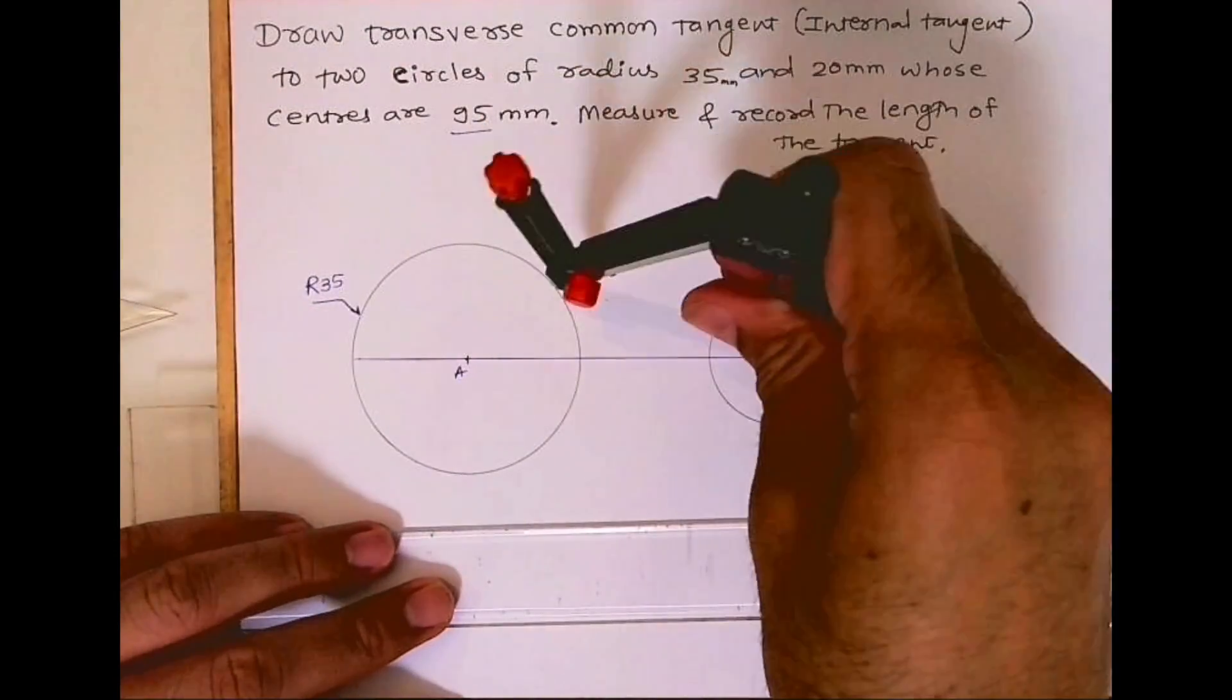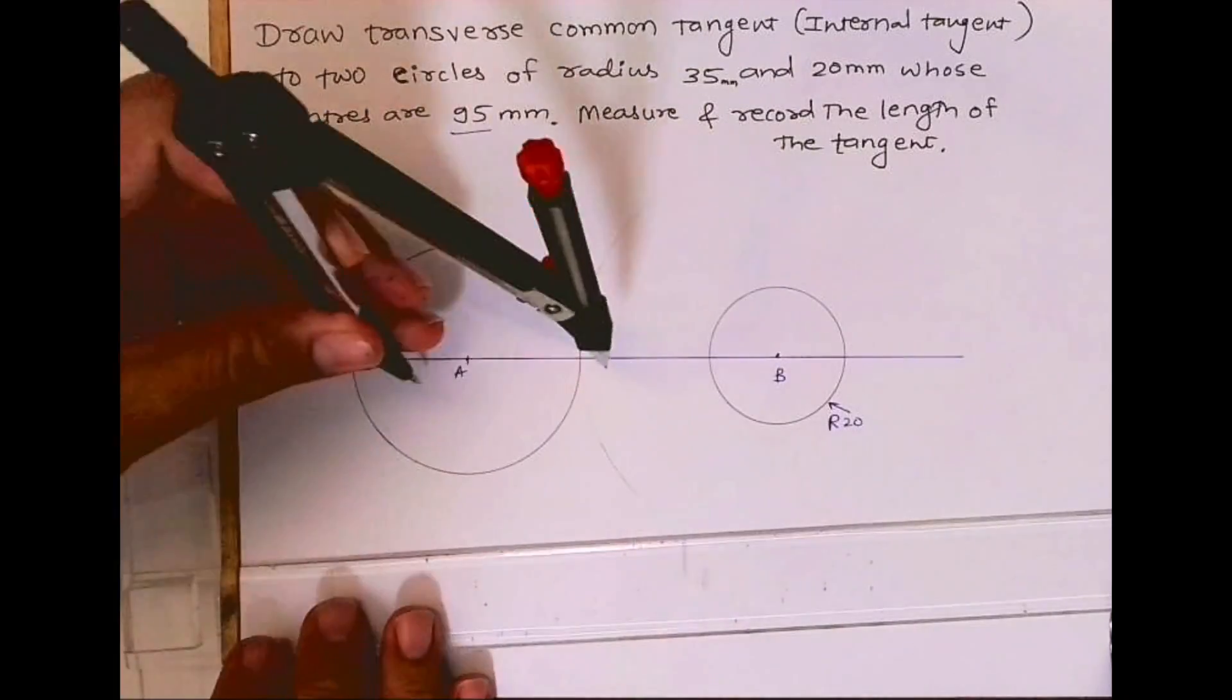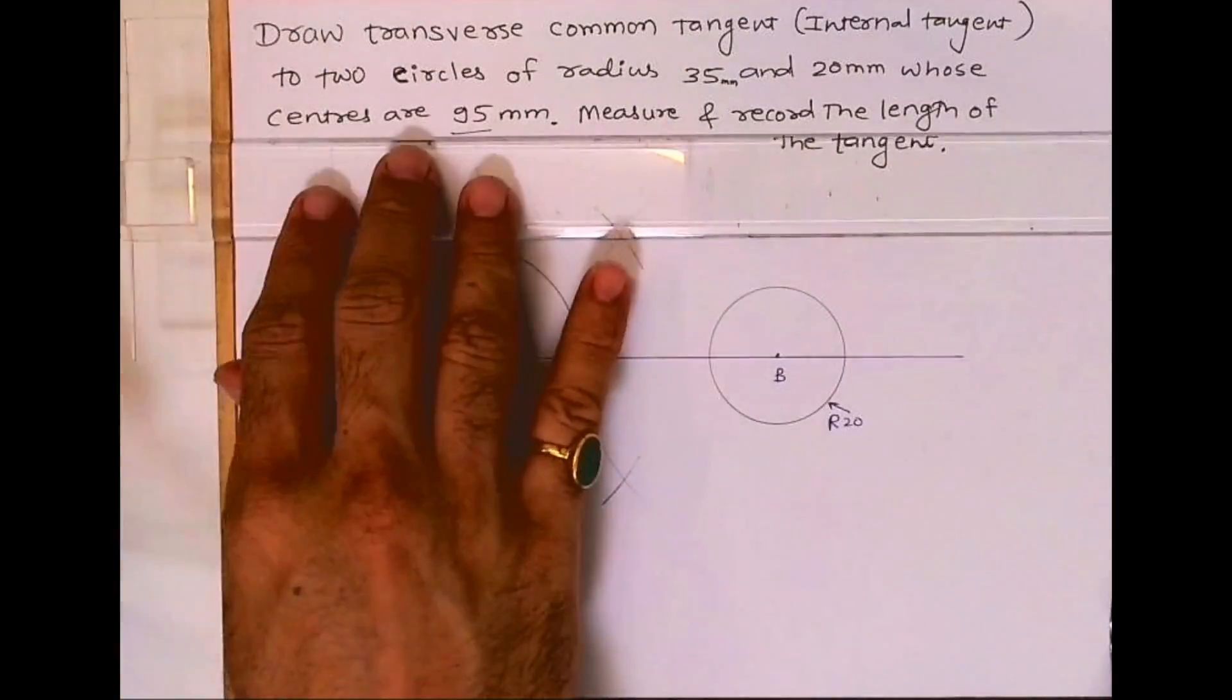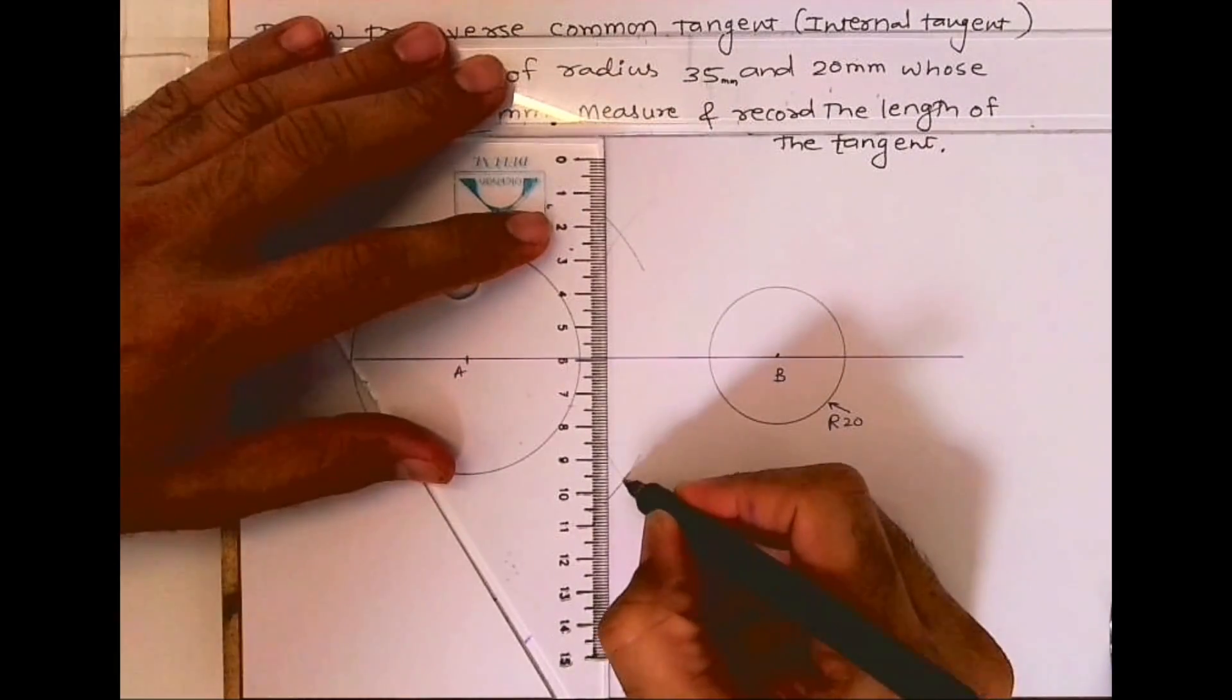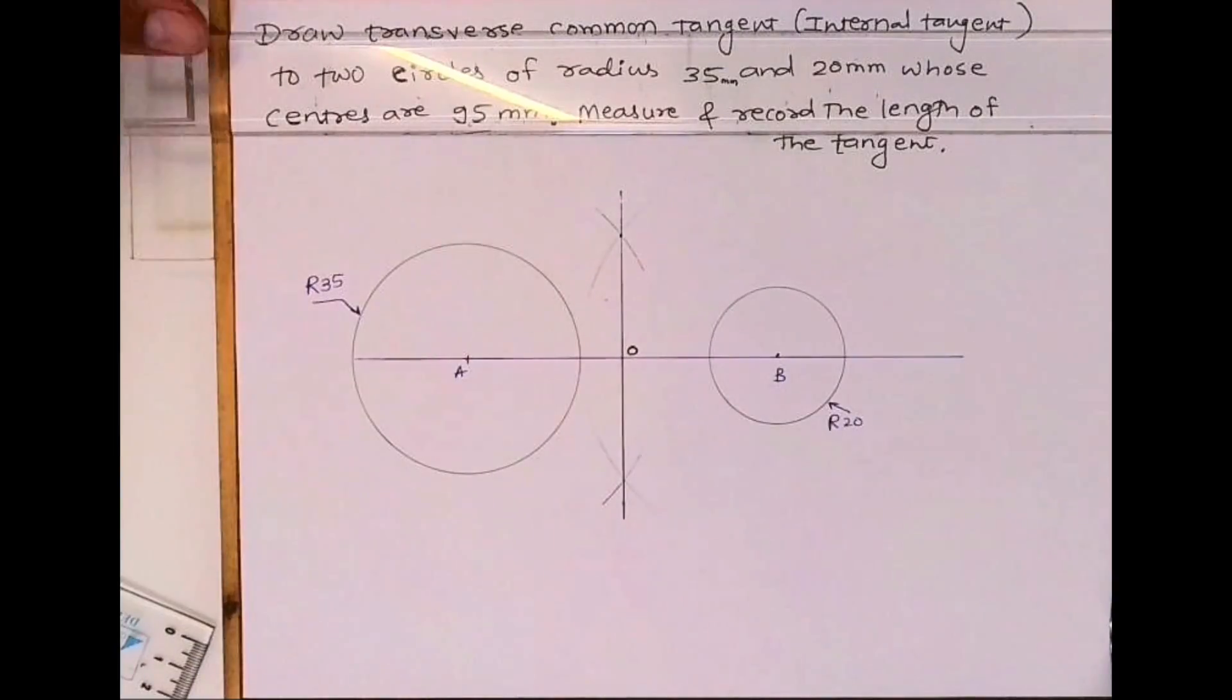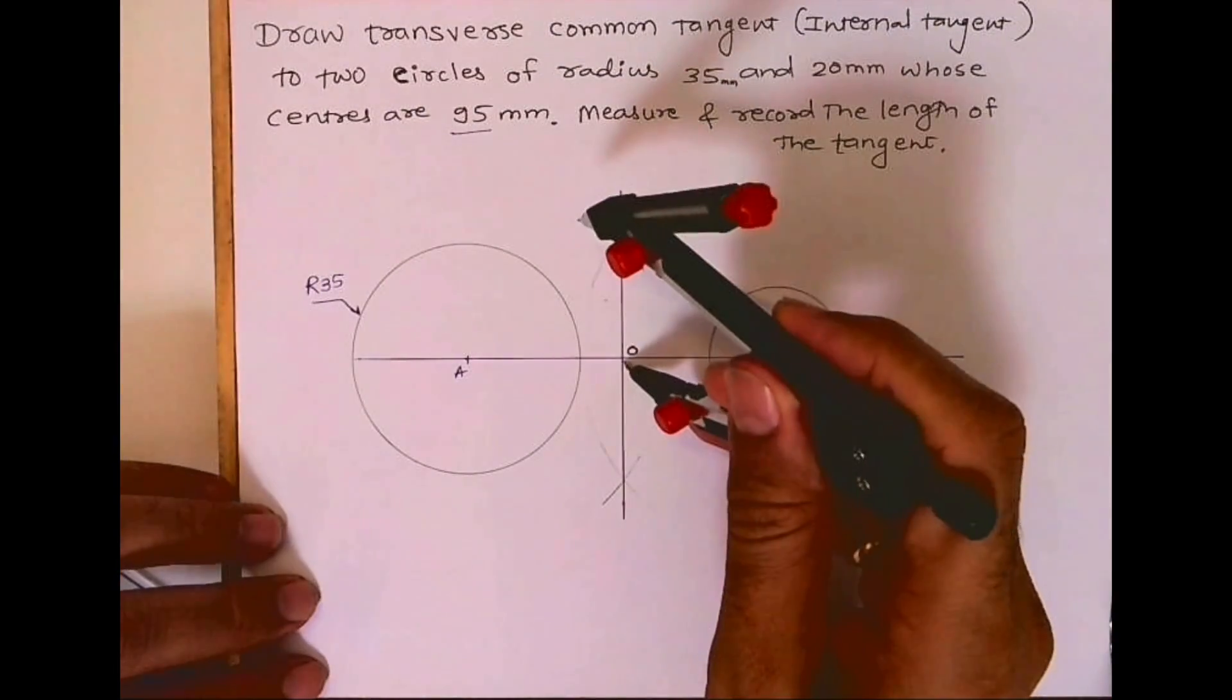Now we'll bisect AB. From point O, we'll take O to A and draw a circle.